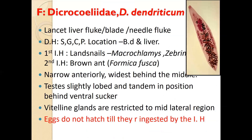Dicrocoelium dendriticum are very small, elongated flukes called lancet flukes or blade flukes, with a narrow anterior and posterior end, widest behind the middle. The testes are lobed and tandem in position, and the vitellaria are restricted mainly to the lateral margins. The main difference in the life cycle of Dicrocoelium compared to Fasciola is that the eggs do not hatch until they are ingested by the intermediate host. Two intermediate hosts are involved: the first is the land snail Cochlicella, and the second is the brown ant.